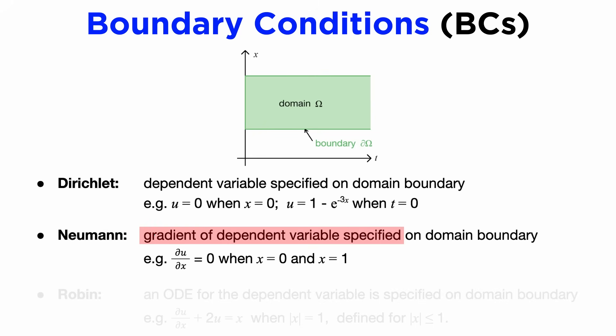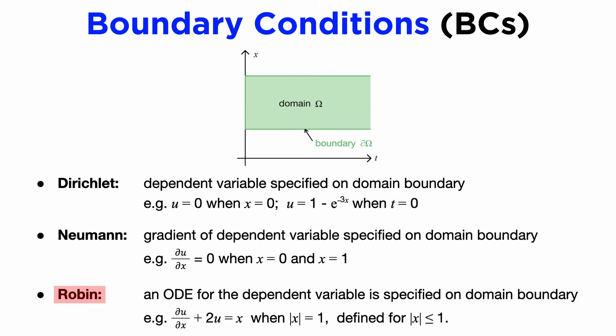The second is the Neumann type, which is where we specify any one of the derivatives of u at some set of points, similar to how we might have y prime equals 0 for an ODE.